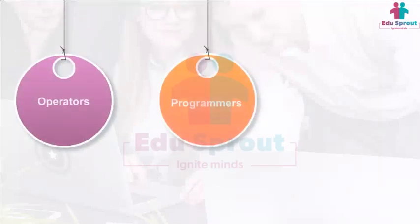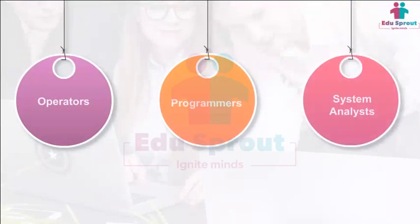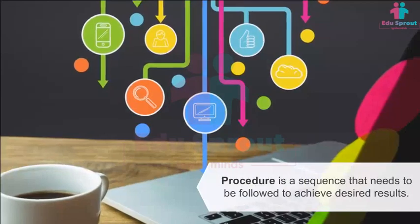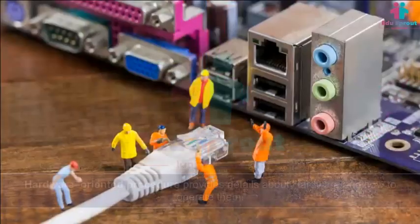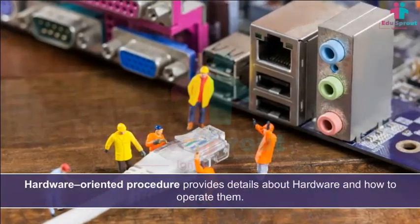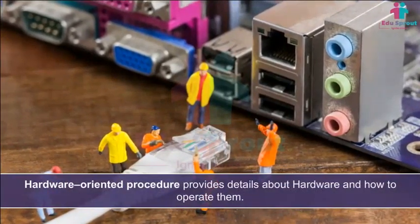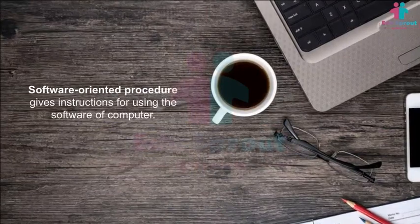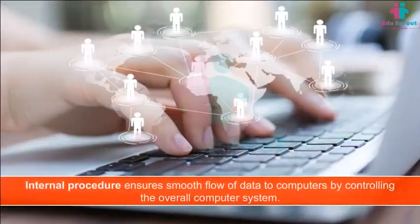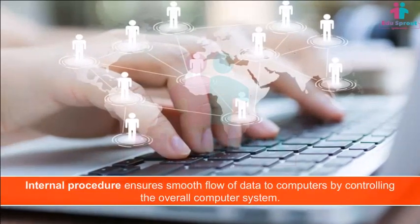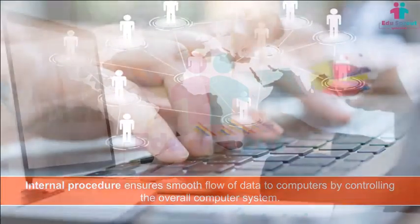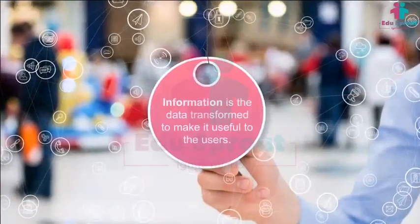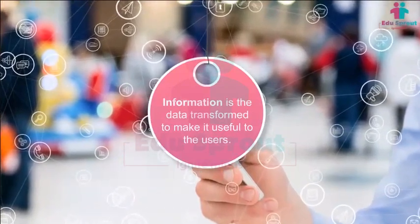Humanware can include operators, programmers, and system analysts. Procedure is a sequence that needs to be followed to achieve desired results. There are three types of procedures: hardware-oriented procedure, which provides details about hardware and how to operate it; software-oriented procedure, which gives instructions for using the software; and internal procedure, which ensures smooth flow of data by controlling the overall computer system. Data is the raw facts and figures used by the computer, while information is the data transformed to make it useful to the users.